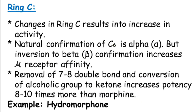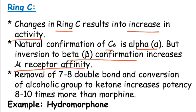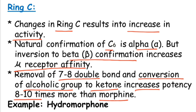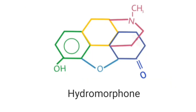Let us see what modifications could be made in Ring C. Changes in Ring C result in increased activity. The natural conformation of C6 is alpha, but inversion to beta conformation increases mu receptor affinity. Also, removal of the C7–C8 double bond and conversion of the alcoholic group to a ketone increases potency 8–10 times more than Morphine. The best example is Hydromorphone, whose structure contains a ketone group at C6 position and the C7–C8 double bond has been removed.